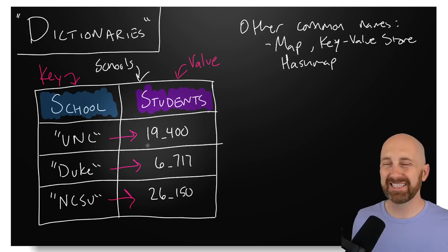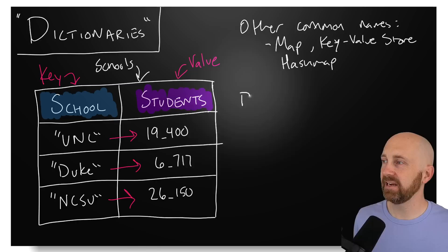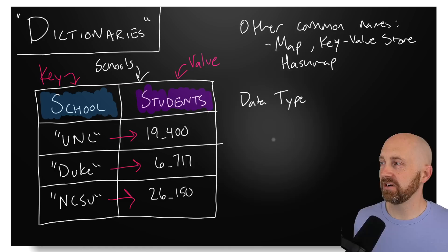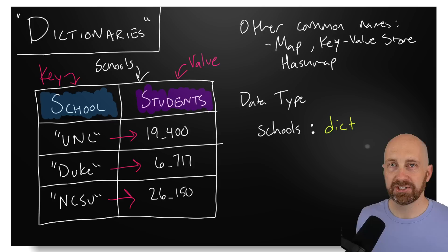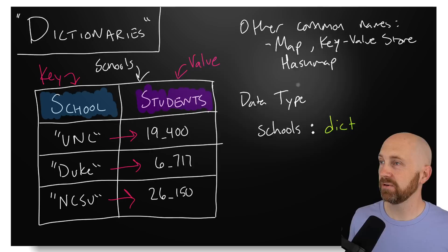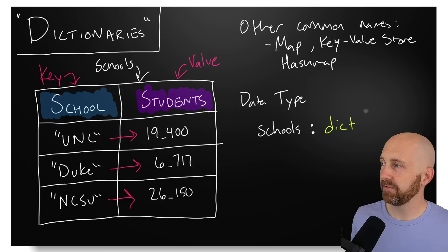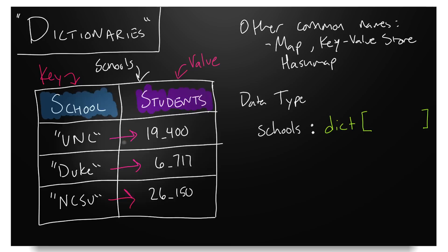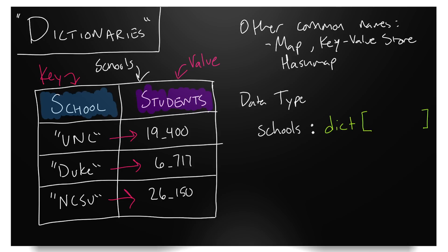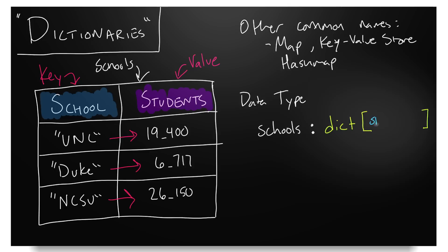The first thing we should understand is the actual data type. If we're declaring a variable for schools, the data type needs to specify that this is a dictionary. In Python, 'dictionary' is abbreviated to just 'dict.' Then, like when declaring a list type, we use square brackets — inside which we need two other types. For this example we have a string for our key type and an int for our value type.